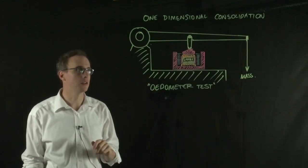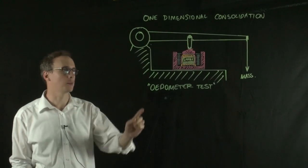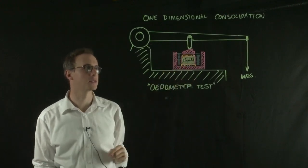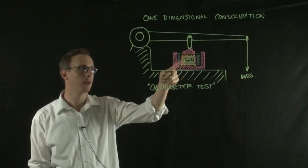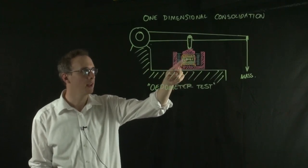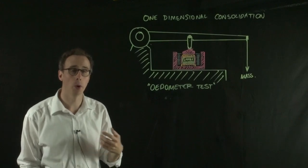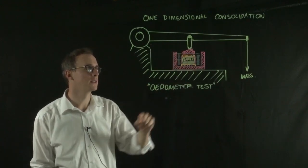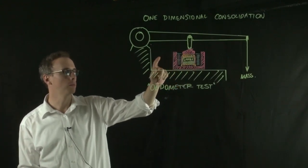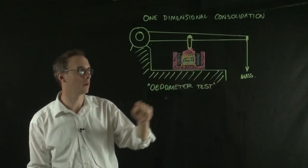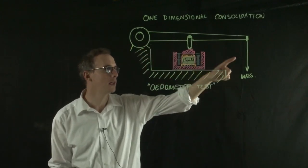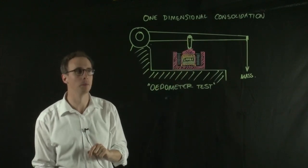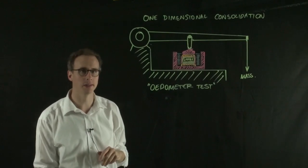This is what an oedometer looks like in cartoon, in profile. We have our oedometer cell in the middle, and sitting within the centre of that cell is a sample. That sits within a confining ring. On the top and bottom of the sample we have porous discs, and that lets water permeate in and out of the sample. Around the outside of the cell we have water and a loading cap. Mass is applied onto the top of that loading cap through a loading arm. At the end of the loading arm we suspend some masses, and that loading arm is attached to the lid of the box.